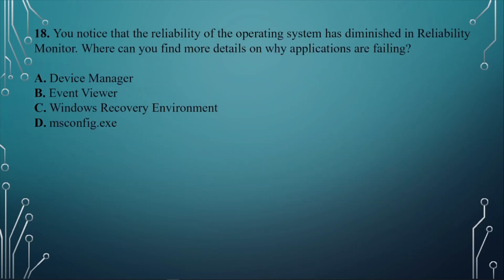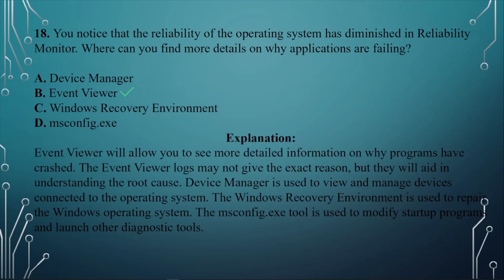Question number eighteen: You notice that the reliability of the operating system has diminished in Reliability Monitor. Where can you find more details on why applications are failing? A. Device Manager. B. Event Viewer. C. Windows Recovery Environment. D. msconfig.exe. The answer is B, Event Viewer. Event Viewer allows you to see more detailed information on why programs have crashed. The Event Viewer logs may not give the exact reason, but they will aid in understanding the root cause.